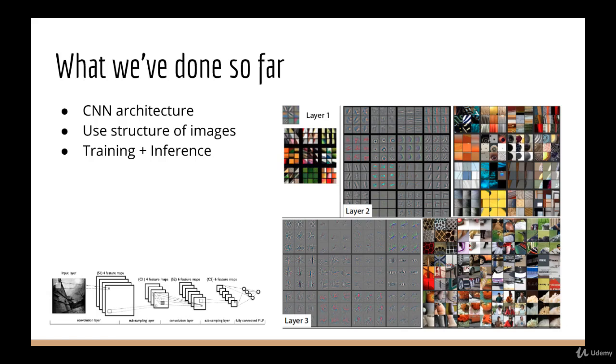The structure of a CNN is such that each layer finds progressively more and more complex features of the input. We looked at how to do both training and inference with a CNN, and we looked at how the same basic architecture of the LeNet has inspired newer architectures such as AlexNet and VGG.